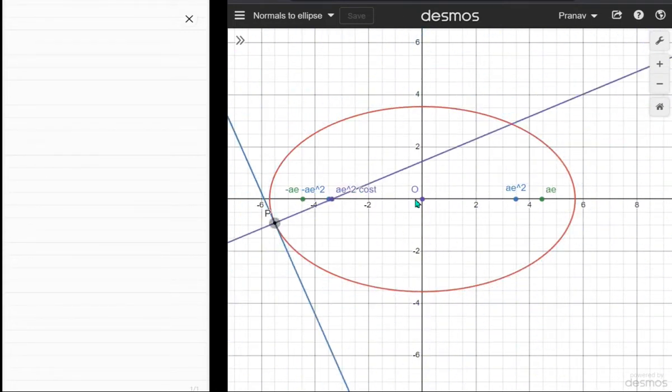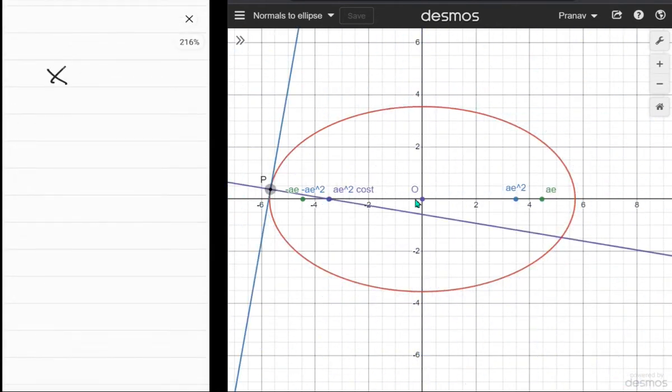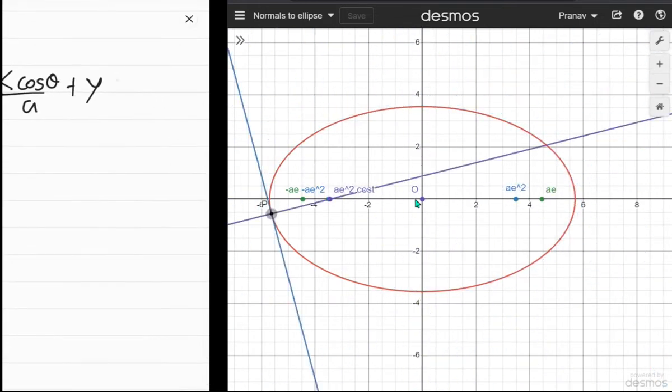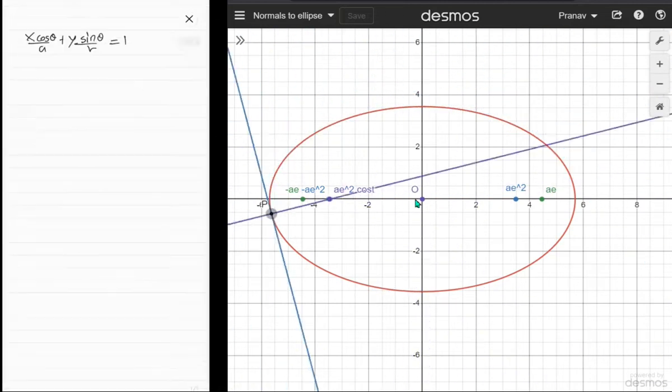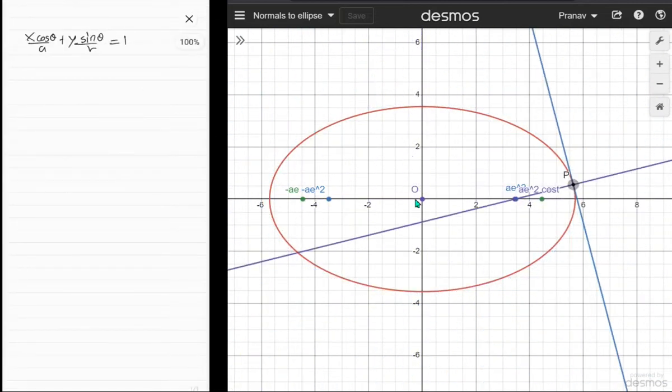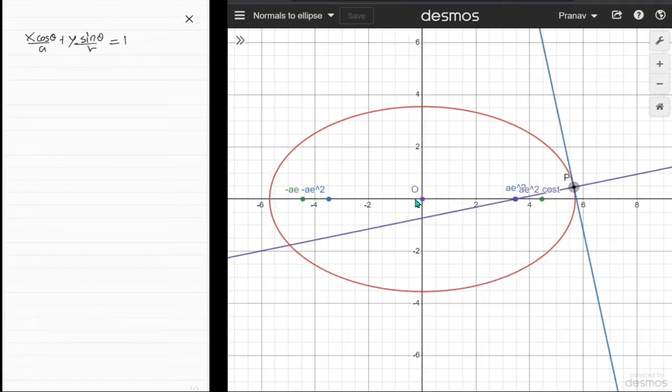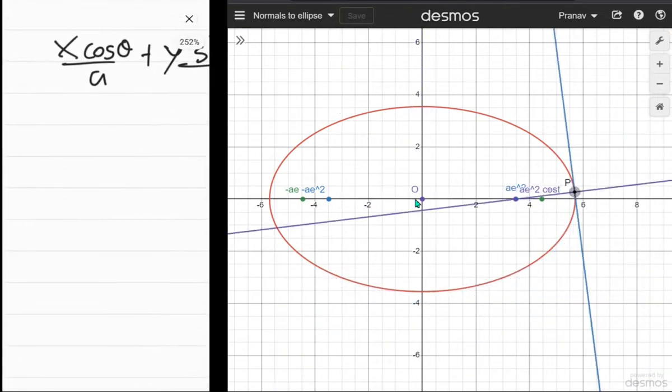First, we need the equation of the normal. The equation of the tangent is given by (x cos θ)/a + (y sin θ)/b = 1. From that, you can figure out the slope of the normal—it should be negative one over the slope of the tangent. To do that, we'll simply